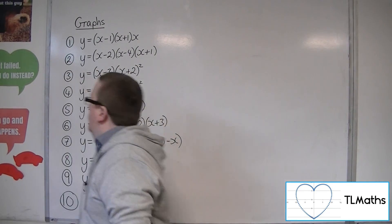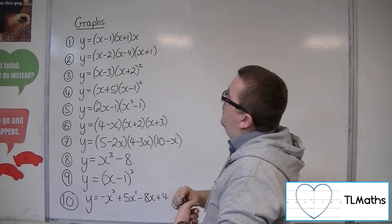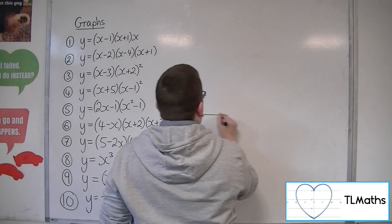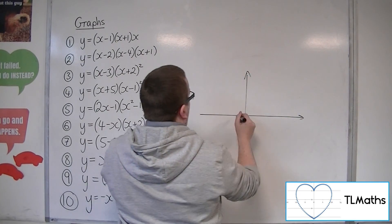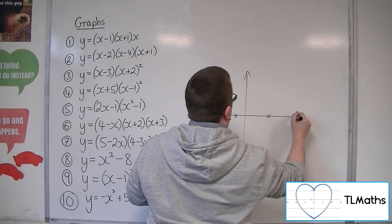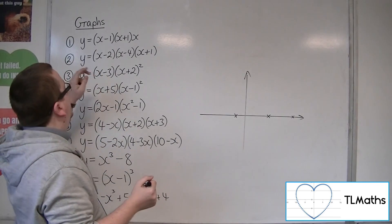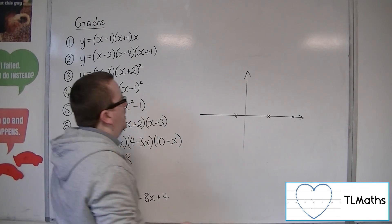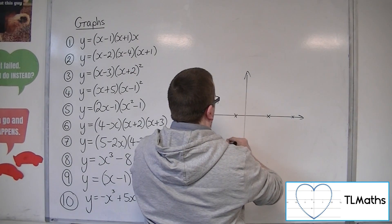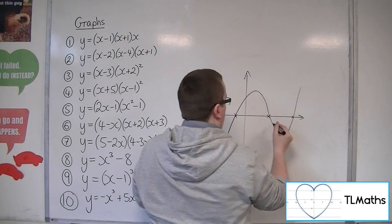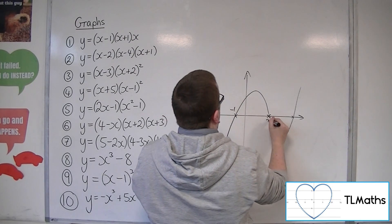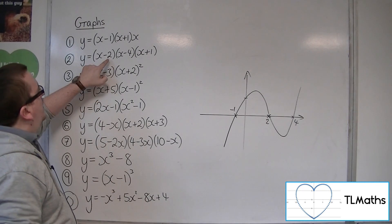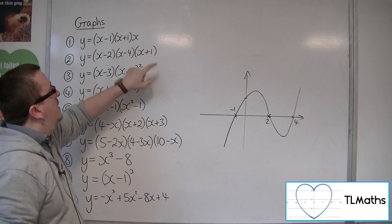Let's have a look at number 2. We've got y is equal to x minus 2, x minus 4, and x plus 1. So the roots are 2, 4, and minus 1. We have minus 1, 2, and 4. Now because we're going to have a positive x-cubed when we multiply out those brackets, we're starting in the bottom left. So it must look something like this. We can identify where it's crossing the y-axis by multiplying minus 2, minus 4, and 1, so that would be 8.